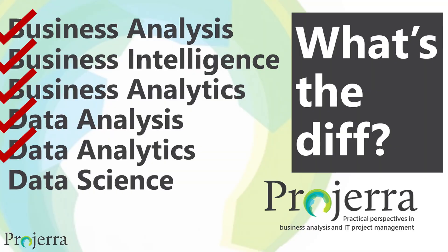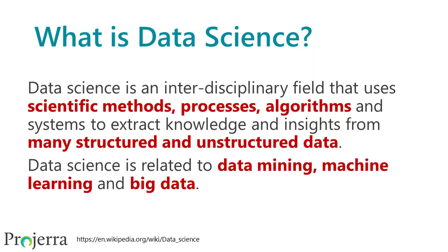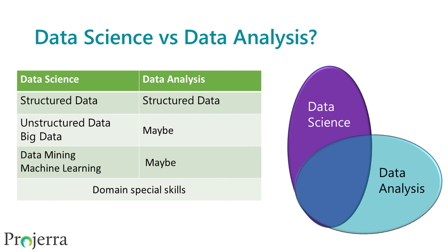Now let's look at data science. Data science is an interdisciplinary field that uses scientific methods, processes, algorithms, and systems to extract knowledge and insights from structured and unstructured data. It is related to data mining, machine learning, and big data. Both data science and data analysis deal with structured data, but the differences come in what happens with unstructured data and big data — that domain is generally reserved for the data scientist, although more advanced data analysts may also get involved. Likewise, data mining and machine learning are generally reserved for those in data science, though advanced data analysts may delve into those problem sets.